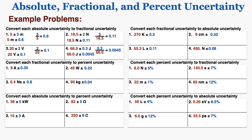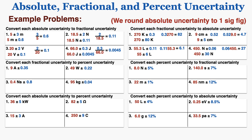To convert each fractional uncertainty to absolute uncertainty, I multiply the fraction by the original number. When I do that, I get the absolute uncertainty for each number. Notice that the uncertainties are rounded correctly to go to the same decimal place as the original numbers — as a policy, we usually round absolute uncertainty to just one significant figure.